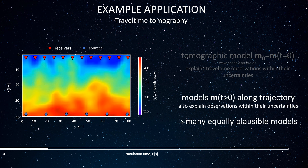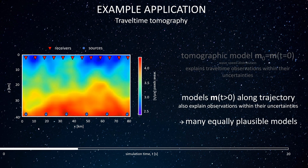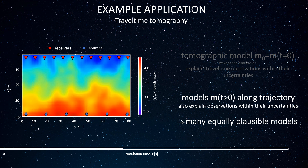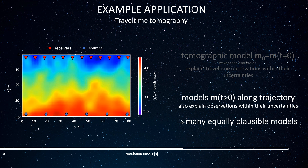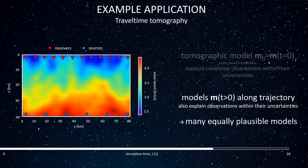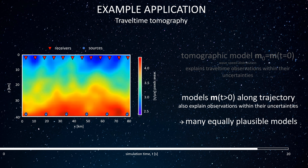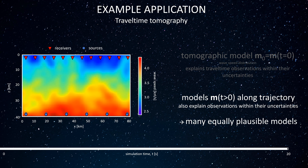As time progresses, the shuttle travels along a Hamiltonian trajectory, thereby producing many alternative models that also explain the travel time observations to within the uncertainties. This means that all of the tomographic models in the movie are equally plausible.